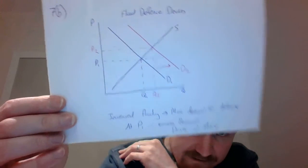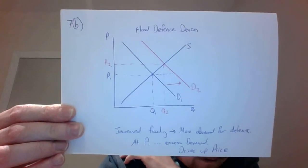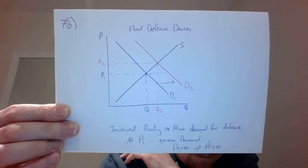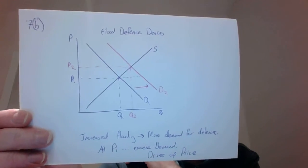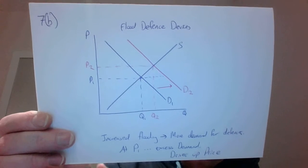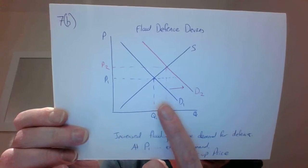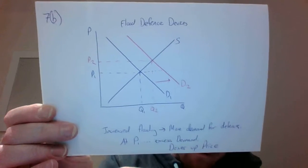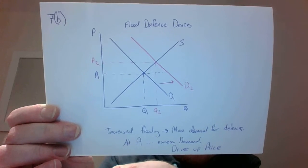Going on to 7a(ii), and we're looking at flood defense devices. And essentially what we're saying is that, given the fact that there's increased risk of flooding across the UK, you're going to have more demand for these devices. And so therefore, increased risk of flooding shifts the demand curve to the right, and you're going to see a rise in the price and a rise in the quantity.